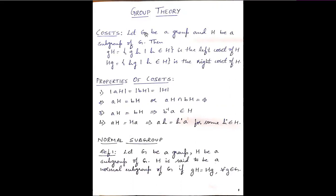Now let us look at some of the properties of cosets. The first property is: the cardinality of any left coset is equal to the cardinality of the subgroup H. Whatever properties apply for the left coset, the same applies for right cosets as well. The second property says any two left cosets are either identical or disjoint — that means they can be equal, or when you take the intersection of two cosets, you will get the empty set.